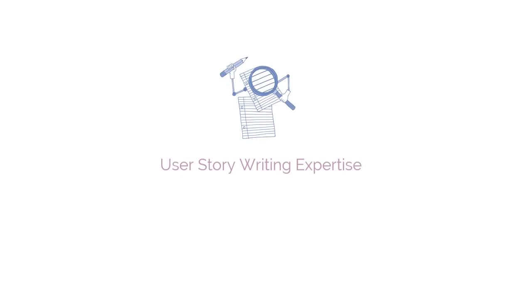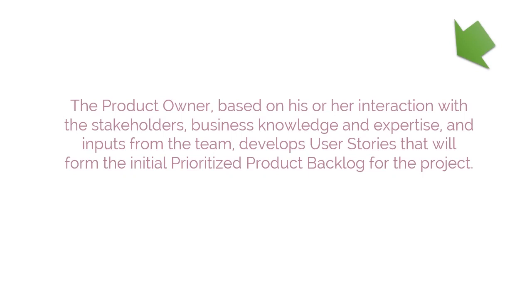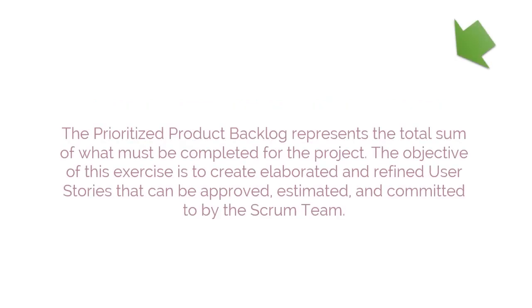The tool that must be used in this process is user story writing expertise. The product owner, based on his or her interactions with the stakeholders, business knowledge and expertise, and inputs from the team, develops user stories that will form the initial Prioritized Product Backlog for the project. The Prioritized Product Backlog represents the total sum of what must be completed for the project. The objective of this exercise is to create elaborated and refined user stories that can be approved, estimated, and committed to by the Scrum team.